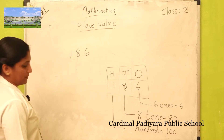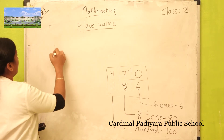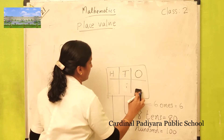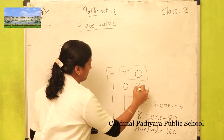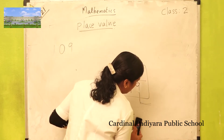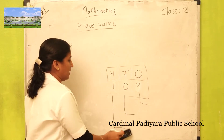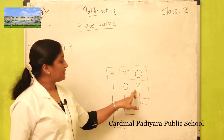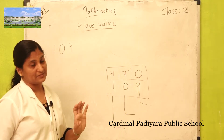One more example: one hundred nine. Find out the place value of nine in one hundred nine. Nine comes in ones place.